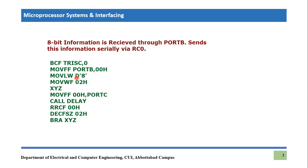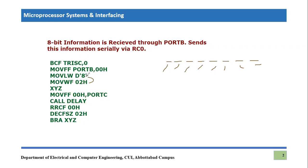Since there are eight bits to transfer, we make a counter of eight. We save decimal eight into the working register and then the working register value is stored in 0x02. So the file at 0x02 holds this count of eight — we will transfer one bit at a time, repeating eight times.